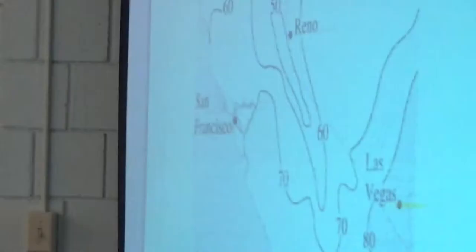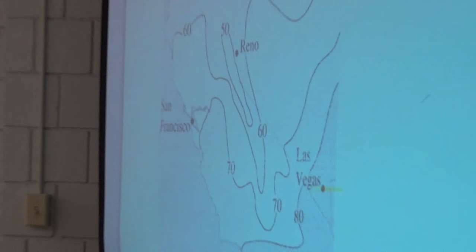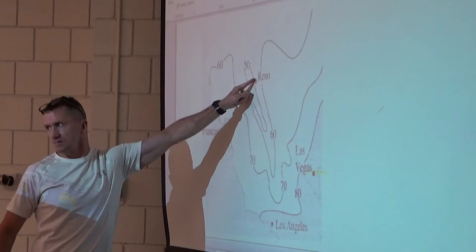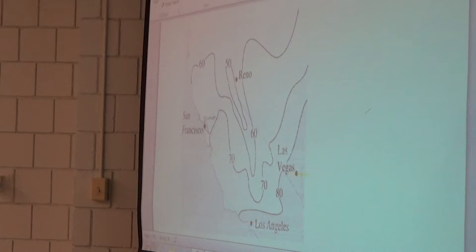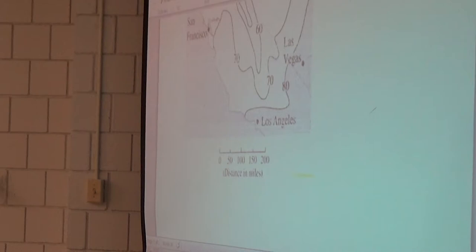One of the first problems out of the textbook wants us to estimate the directional derivative at Reno in the direction of Las Vegas. The numbers in there are in the 50s — those contours are temperatures, the actual temperatures. We need to know the distance; everything was in miles. I'll slide this down so you can see the scale.